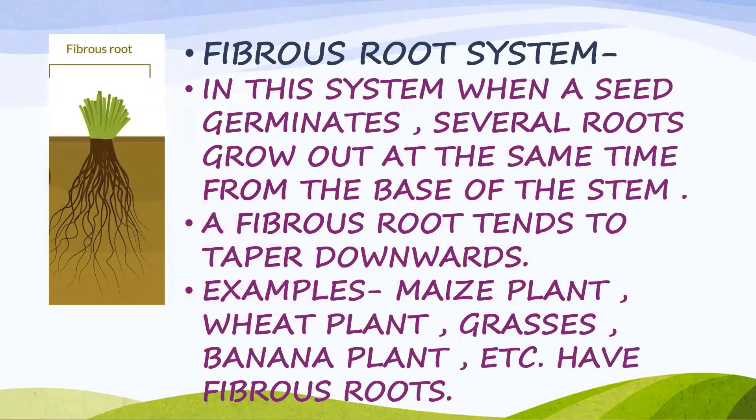In the fibrous root system, when a seed germinates, several roots grow out at the same time from the base of the stem. A fibrous root tends to taper downwards. Examples are maize plant, wheat plant, grasses, banana plant, and so on.